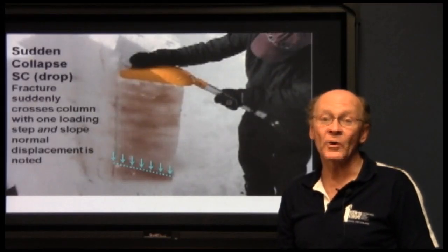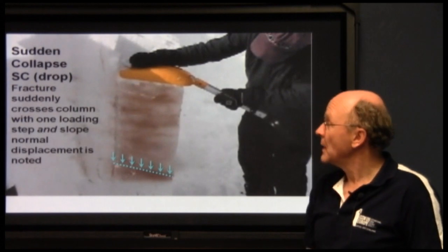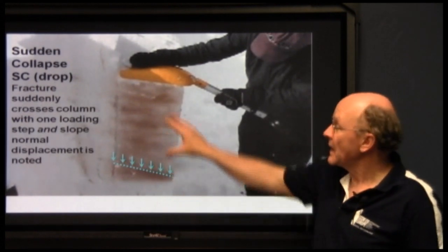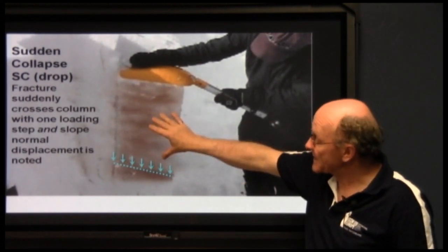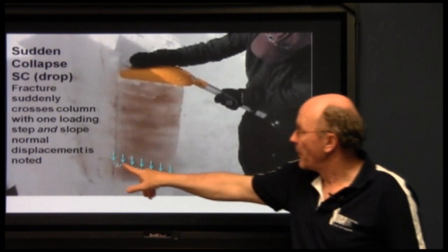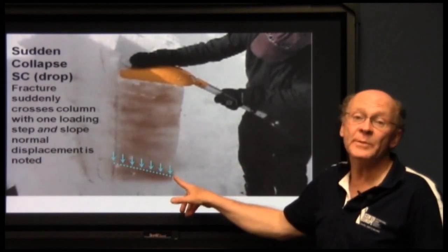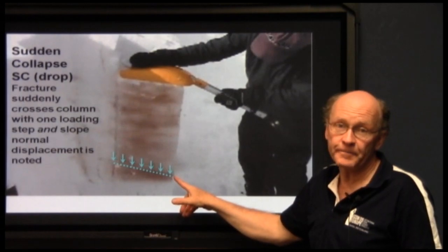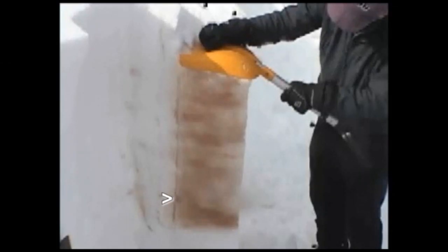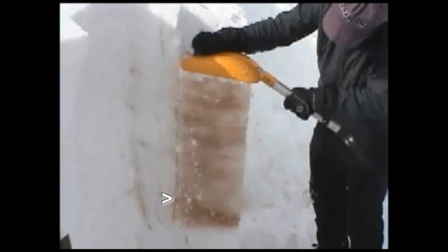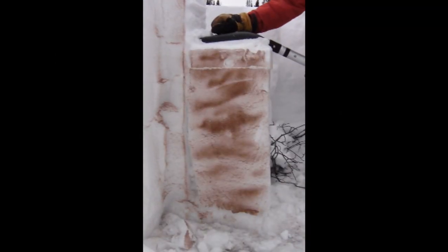A sudden collapse, or SC, also called a drop, is when a fracture appears suddenly and the upper part of the column sits down because the weak layer collapses. This is slope-normal displacement, visible as a collapse on the weak layer. Watch the column move downwards as the weak layer collapses — this is a sudden collapse. Here, depth hoar at the base of the snowpack collapses suddenly.